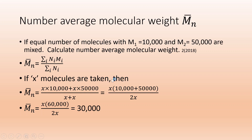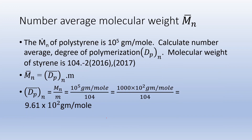Since equal number of molecules are taken, if I consider x molecules, I can write this as x×10,000 plus x×50,000 divided by the total number of molecules, which is x plus x. On simplification, this becomes x×(10,000 + 50,000) divided by 2x, which gives x×60,000 divided by 2x. Cancelling x, we get 60,000 divided by 2, which equals 30,000.